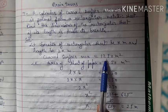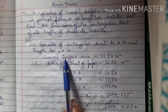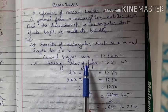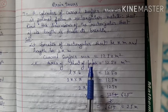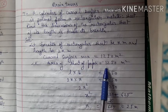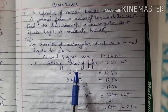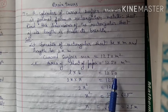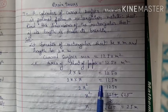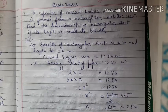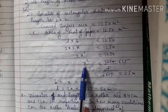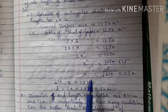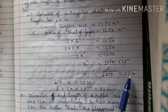Curved surface area is given as 1250 meter square. Since curved surface area equals the area of the sheet, we have length into breadth equal to 1250. So 2x into x equals 1250, giving 2x² = 1250, x² = 625, therefore x = √625 = 25 meter.